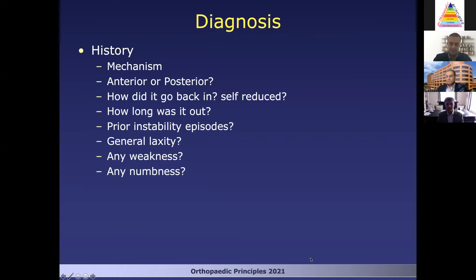So the diagnosis — when I see a patient with shoulder instability or presumed shoulder instability, I'm going to first talk about the mechanism. I want to make sure that this was truly an anterior dislocation, or make sure that it wasn't a posterior dislocation that has been lumped into being an anterior instability episode. How did it go back in? Was it self-reduced — in which case this was maybe more of a subluxation and a lesser traumatic injury — or if it was reduced by someone else, how long was it out for? The longer it was out for, the more likely I'm going to think about neurological injuries and a larger Hill-Sax lesion.